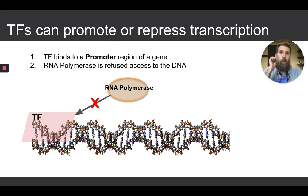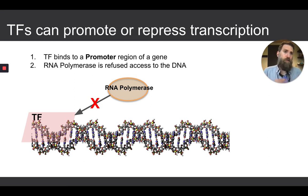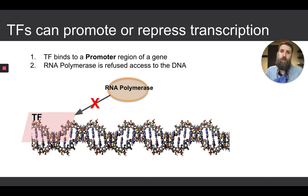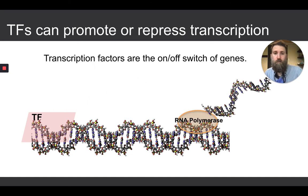Transcription factors can also repress transcription. A different type of transcription factor can bind to the promoter region of the same gene but do the opposite — it prevents RNA polymerase from binding, essentially rebuffing it. So the polymerase is refused access to the DNA, it can't make the RNA, and therefore the protein is never made. A repressive transcription factor may compete with a promoting one. In this way, transcription factors are the on/off switch of genes.